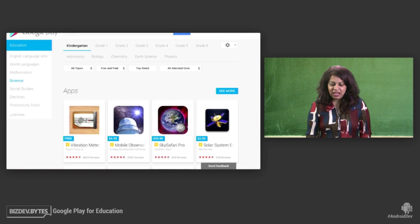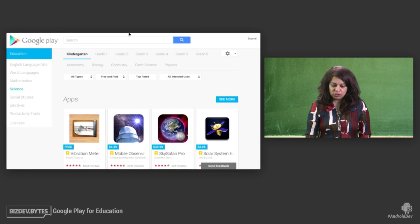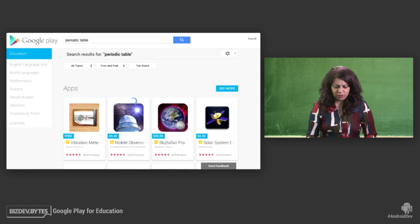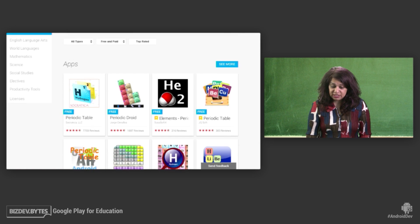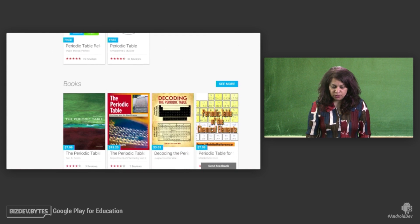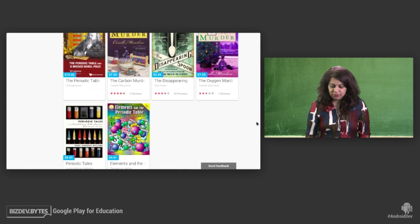And then finally, I want to show you how I can search for all sorts of content on this. So I'm a chemistry club president and I'm looking for content on the periodic table. And I don't know what exactly I'm looking for, but I know I want to send some interesting content out. I can just search by periodic table and I find not just a list of great apps, books, but also books related to the periodic table as well as videos.